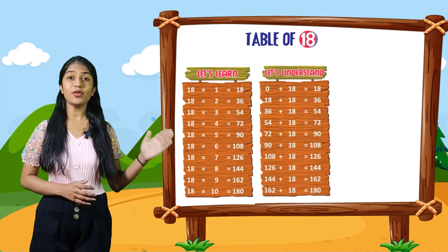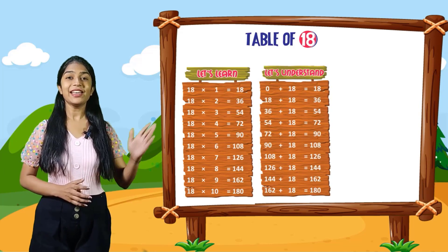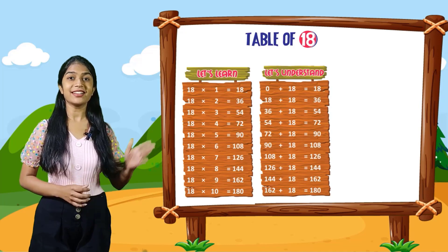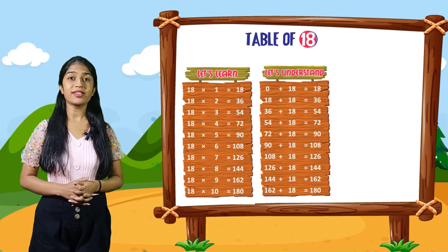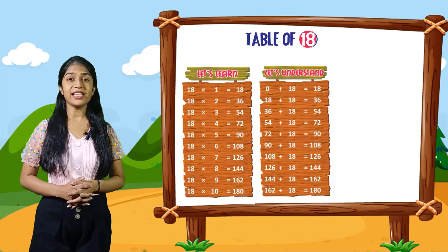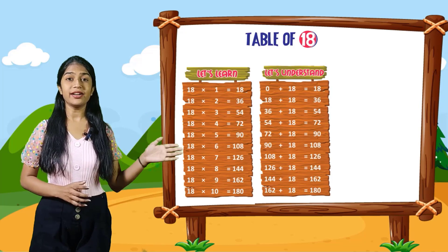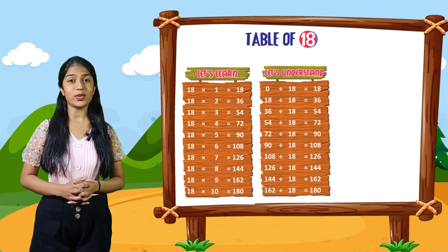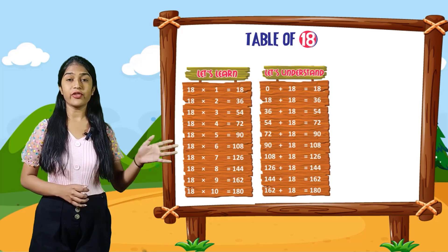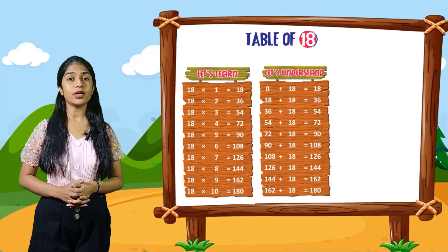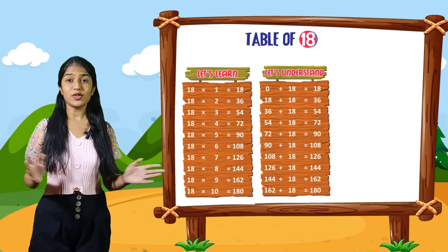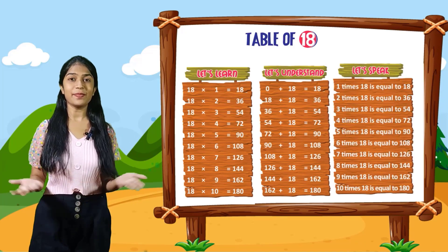So let's understand. 0 plus 18 is equal to 18. 18 plus 18 is equal to 36. 36 plus 18 is equal to 54. 54 plus 18 is equal to 72. 72 plus 18 is equal to 90. 90 plus 18 is equal to 108. 108 plus 18 is equal to 126. 126 plus 18 is equal to 144. 144 plus 18 is equal to 162. 162 plus 18 is equal to 180.